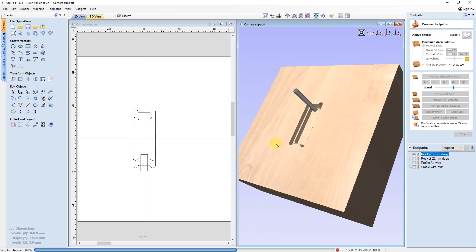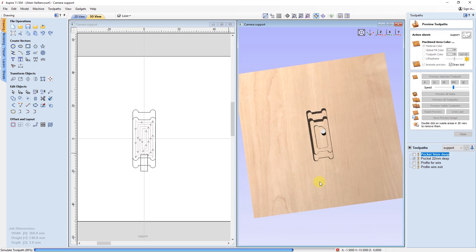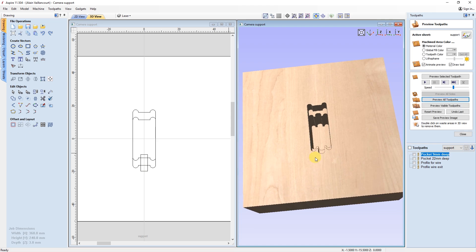I also need some kind of support to hold the camera to the CNC. This is what I've designed. It needs to be cut.